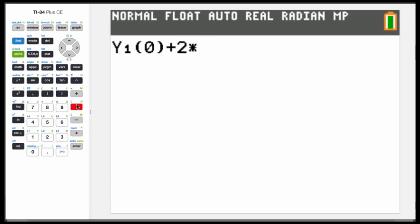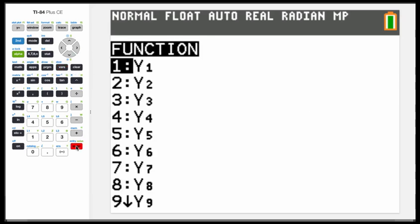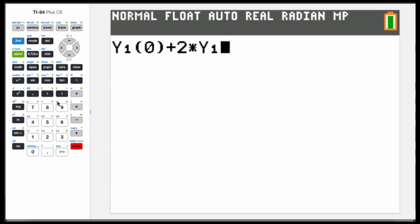So this is telling the calculator to evaluate the function we have under y1 at 0 plus 2 times, now we need to do the same thing for y1 of pi over 4. So we hit VARS across the top to y VARS into function, y1, and in parentheses, we will have pi over 4. And we're just going to continue typing it in like that.